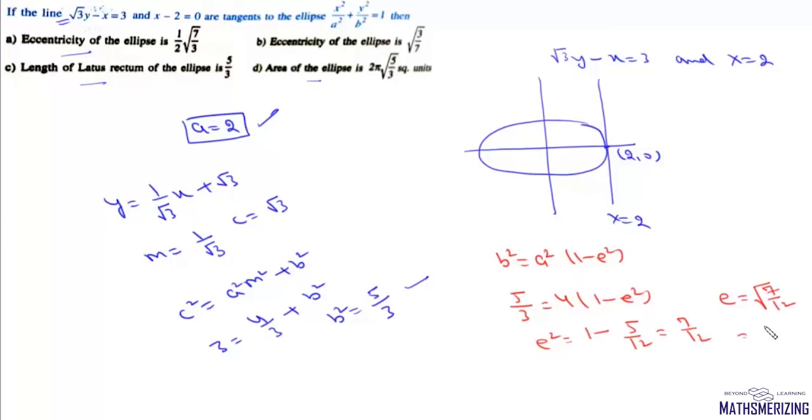We can also write the area of this ellipse. We know that area of an ellipse is πab, so we have π, and then the value of a is 2 and the value of b is √(5/3). So the area of this ellipse is 2π√(5/3), and that's your option D.